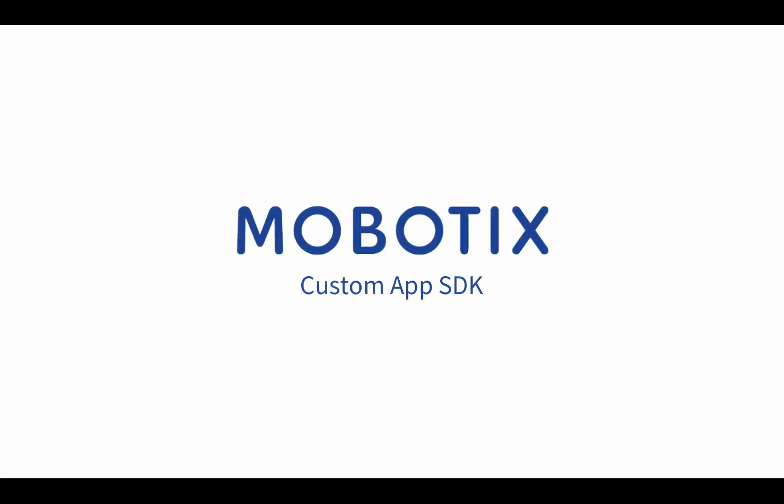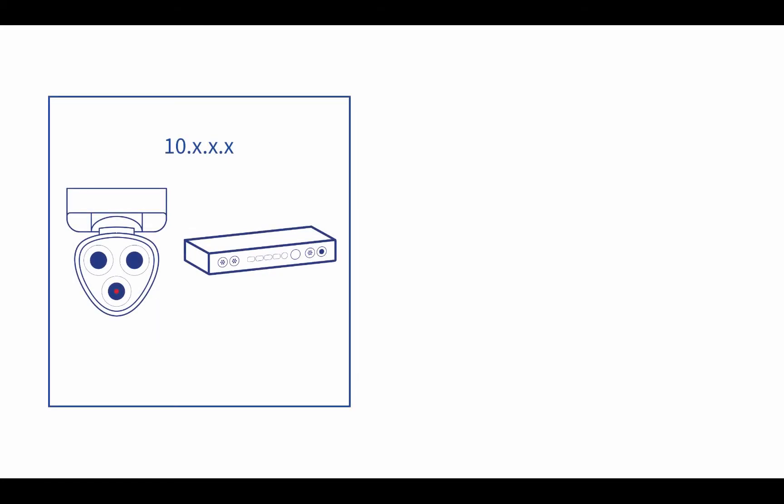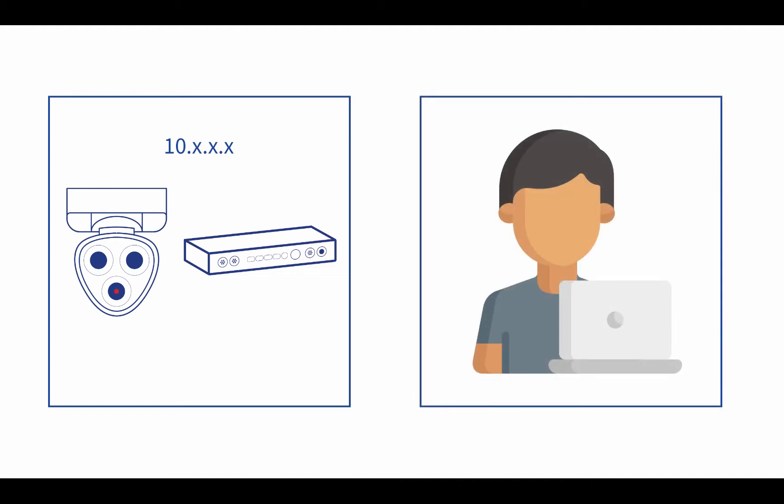With the release of the Custom App SDK, Mobotix enables you, our partners and users, to realize your individual project requirements with specially developed apps on board of the Mobotix 7 platform. All you need to start your own development is one or more serial numbers of Mobotix 7 IoT devices on which your app will be used, a Linux system as development environment, and, ideally, existing development experience with C++ and Linux.